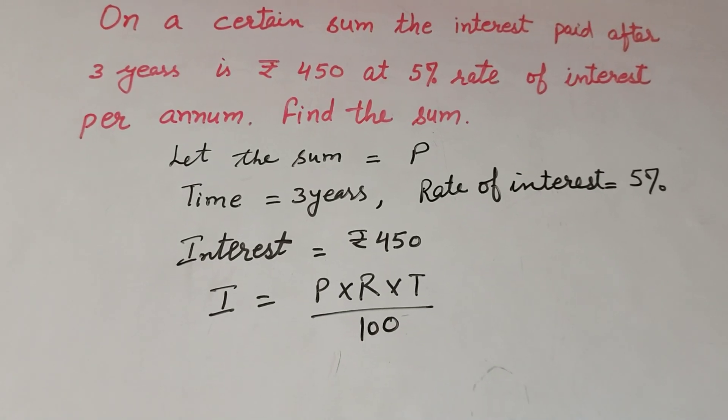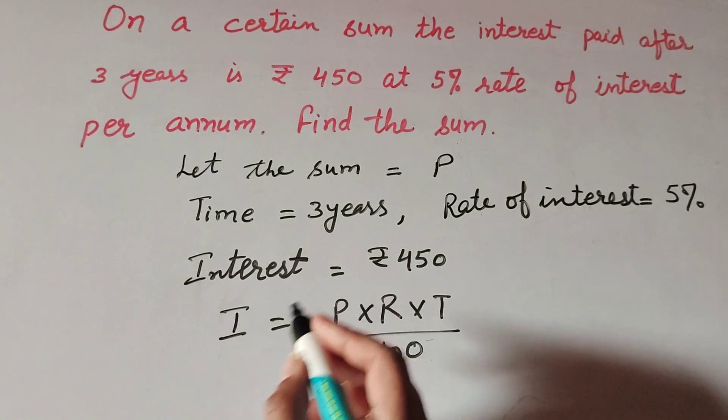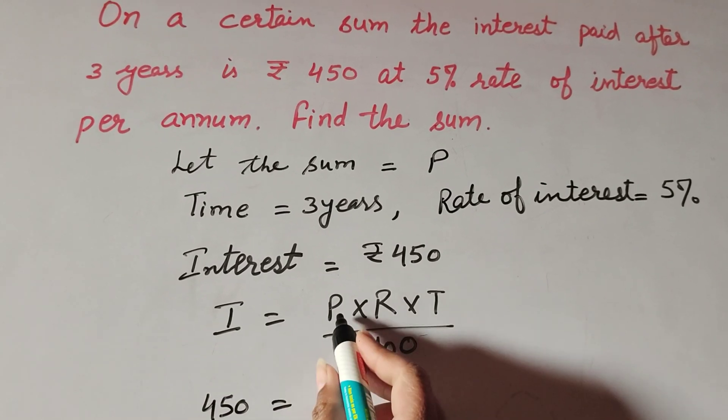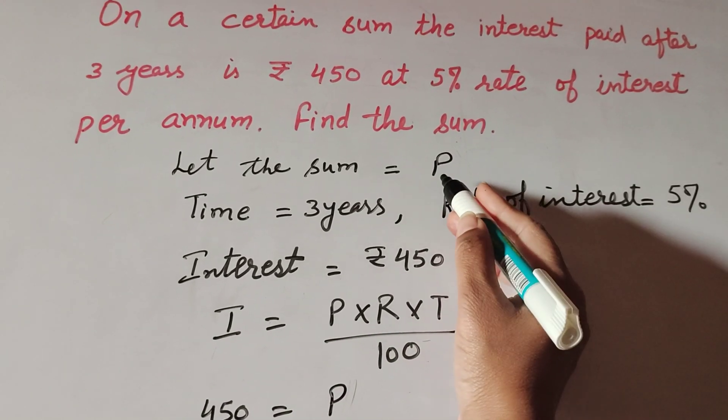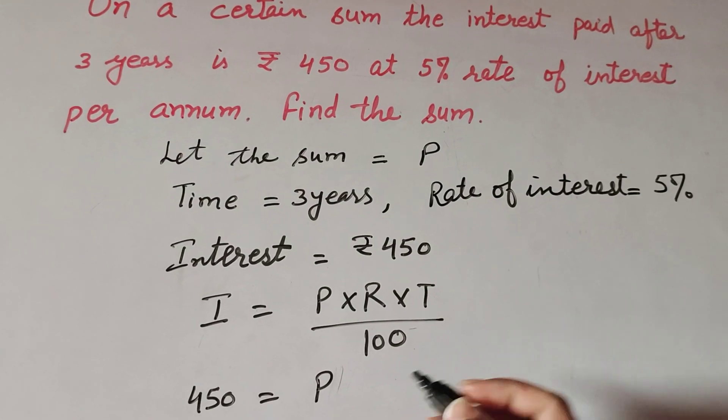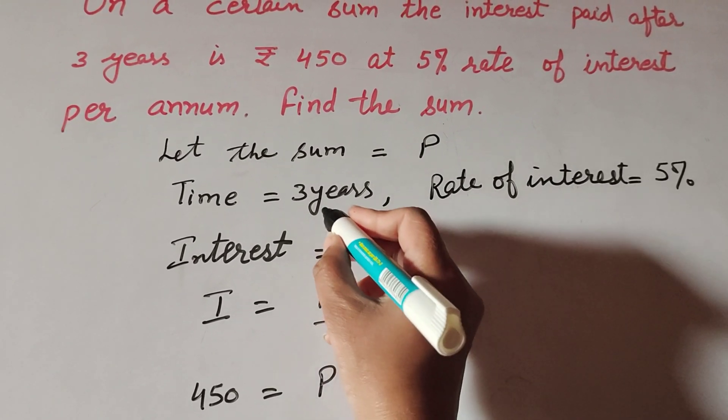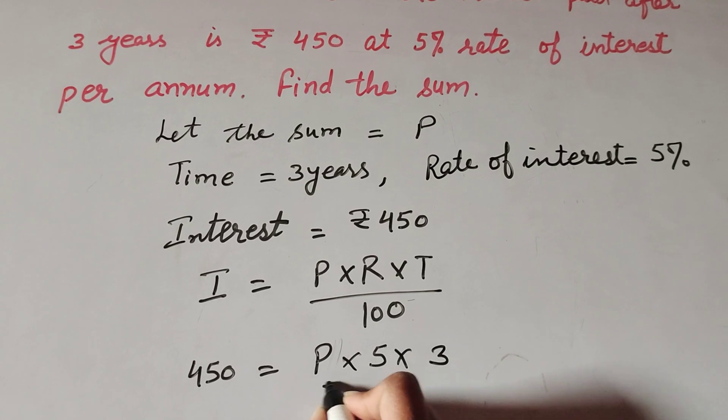In this, I equals 450 equals P (that we have to find) multiply R (rate of interest is 5) multiply time (3 years) over 100.